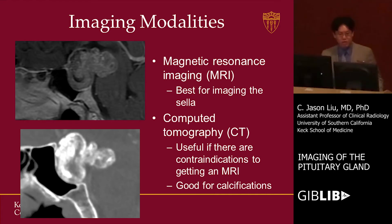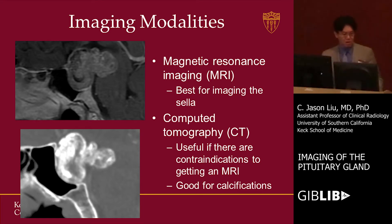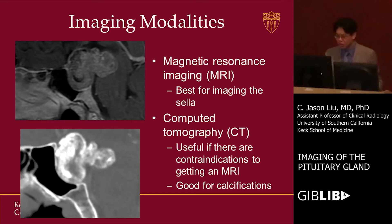There are patients who may not be able to get an MRI, either due to implantable devices that are not MRI-compatible, or for whatever other reason. In those cases, CT — computer tomography — is a potential alternative. Soft tissue contrast is not as good as MRI, but it can still give you some definition of what the sella looks like and what the mass is doing to the surrounding structures.